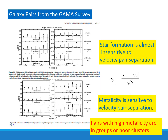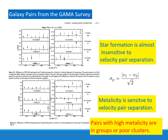In conclusions: compact groups have collapsed at least once. The fossil record of star formation provides unlikely dates for interaction consistent with the model. The scenario we have outlined is a way out of the short dynamical time paradox in compact groups, and the ideas learned from compact groups have allowed us to interpret the dynamical state of galaxy pairs. These results are published in Lopez-Cruz et al. 2019 in the Astrophysical Journal Letters and in Garduño, Lara-Lopez, and Lopez-Cruz — a master's thesis from INAOE.